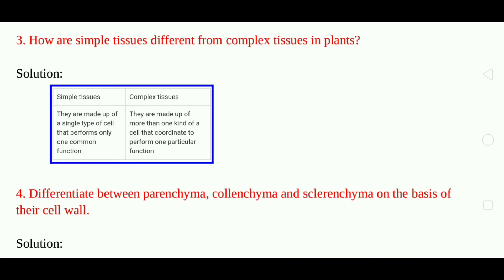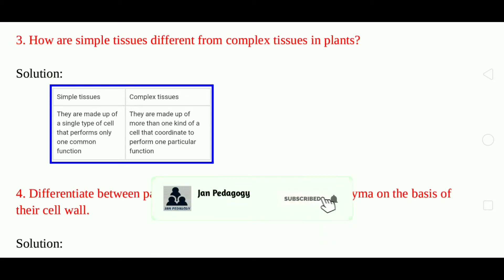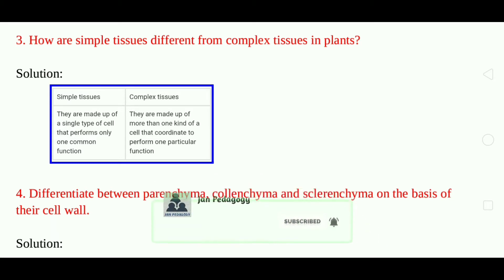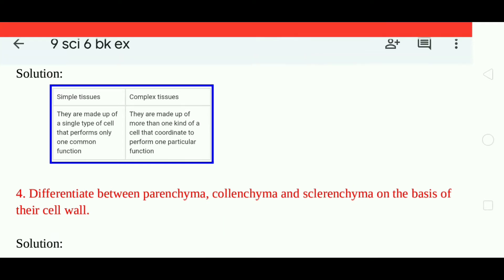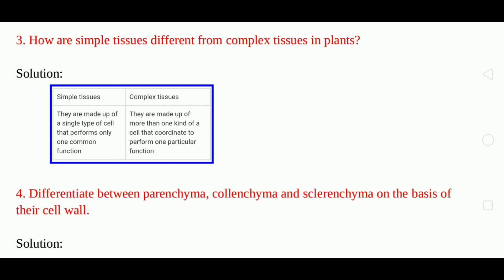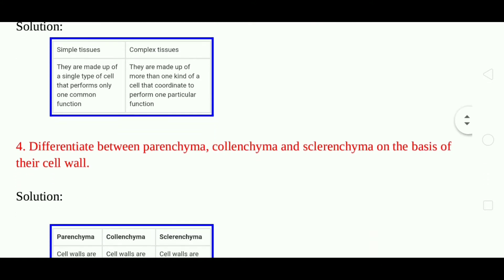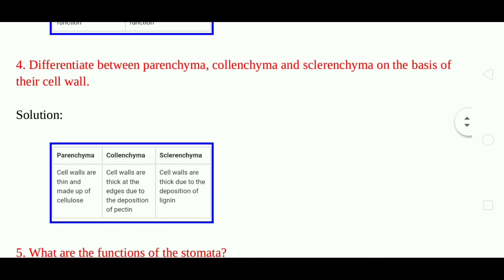Question 3: How are simple tissues different from complex tissues in plants? Answer: Simple tissue is made up of a single type of cell that performs only one common function. Complex tissue is made up of more than one kind of cell that coordinate to perform one particular function.